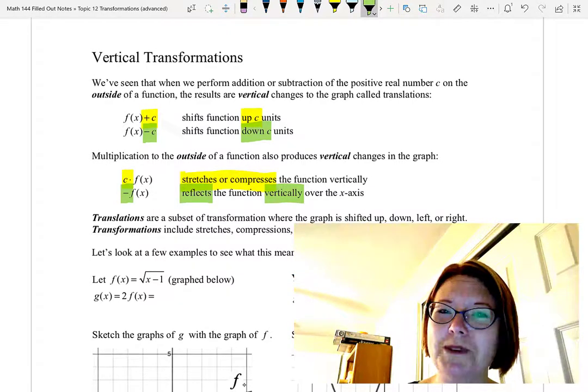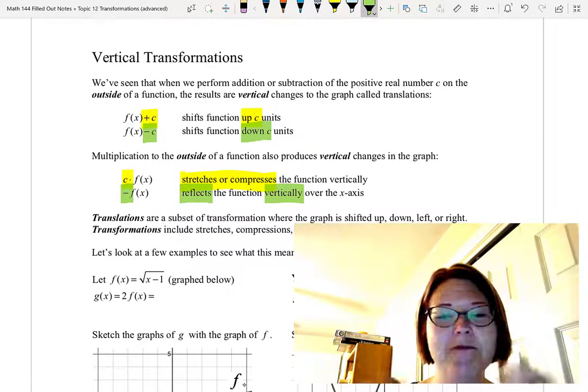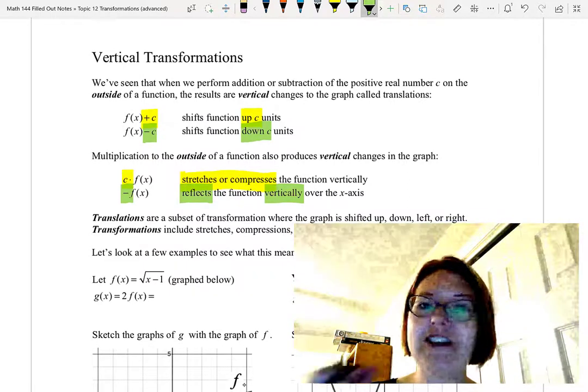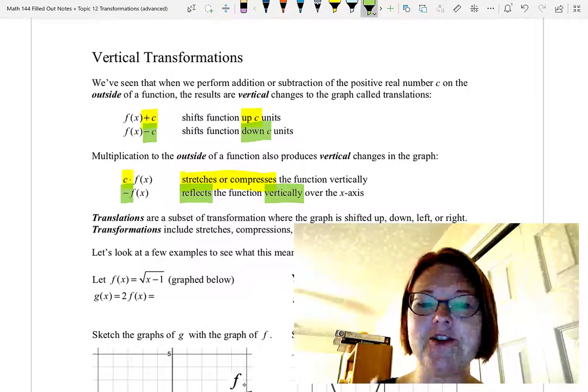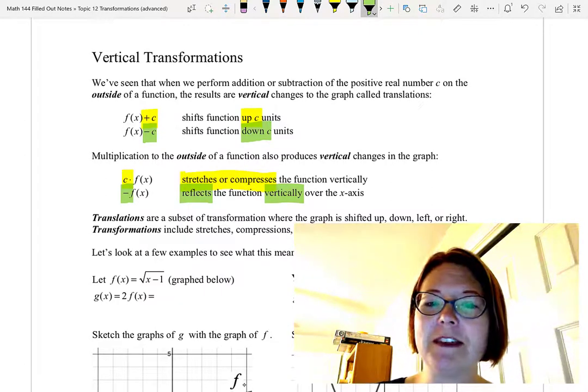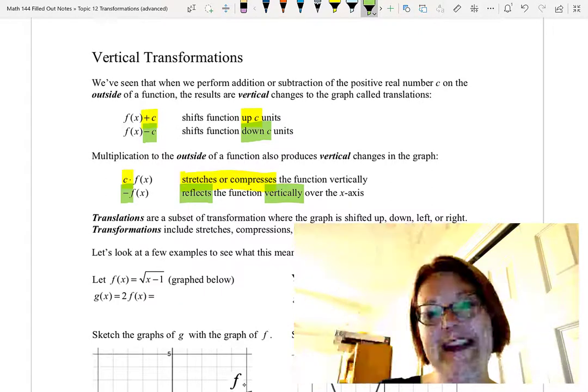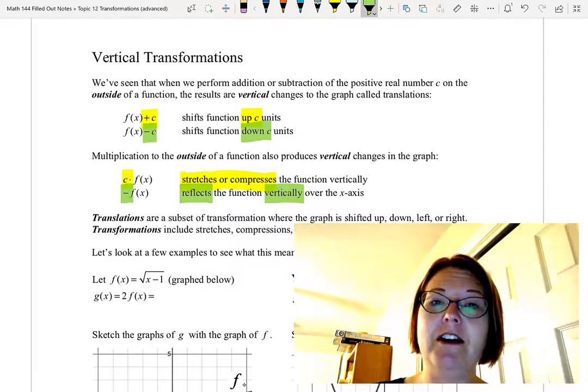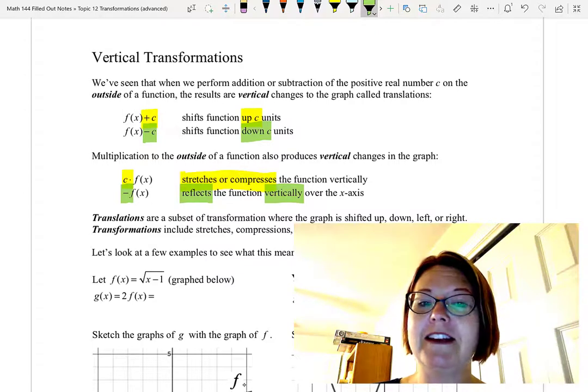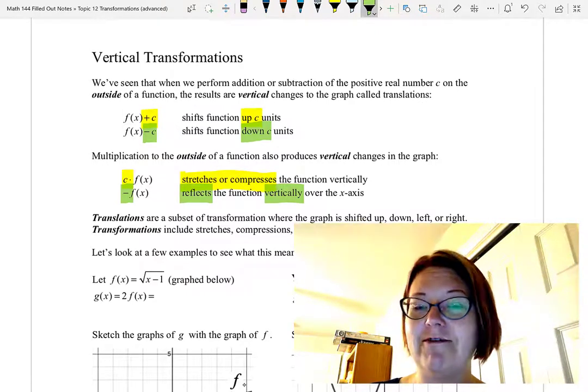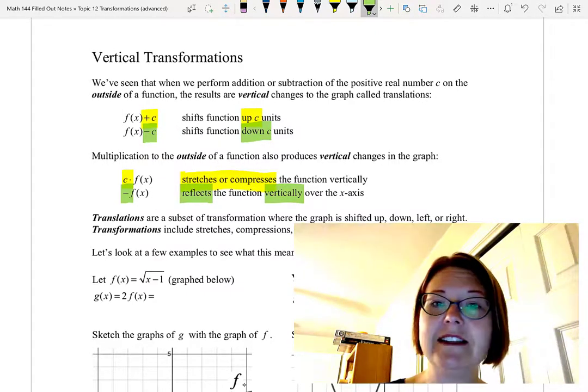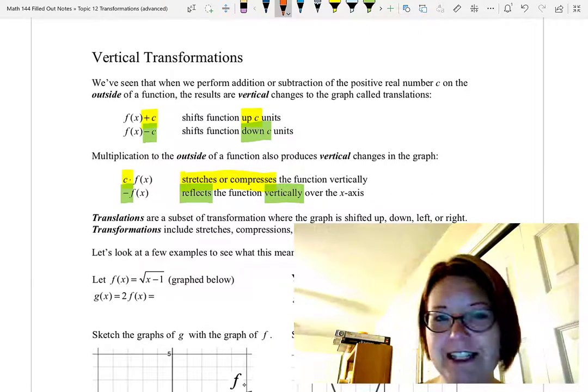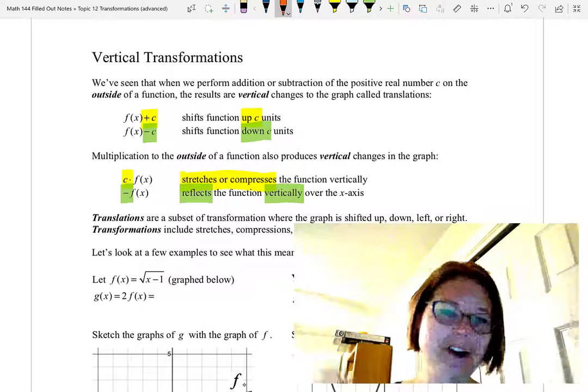Now we have two words we use for these kinds of movements to a graph. The translations are actually a subset of transformations, and translations are specifically moving the graph up, down, left, or right. The transformations include other types of movements like stretches, compressions, and reflections. So a translation is actually a type of transformation.